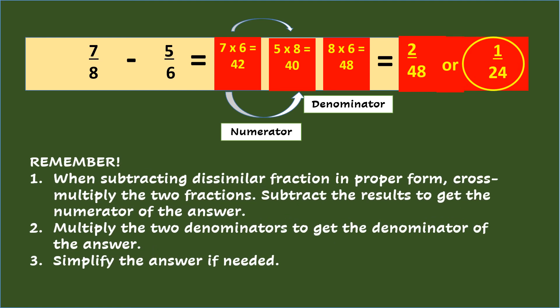Remember: when subtracting dissimilar fractions in proper form using cross-multiplication, cross-multiply the two fractions, subtract the results to get the numerator of the answer, multiply the two denominators to get the denominator of the answer, and simplify the answer if needed.